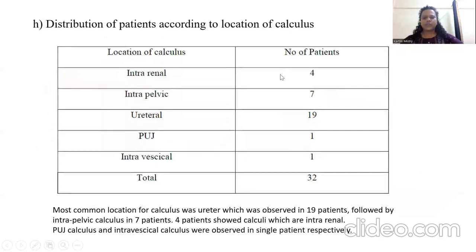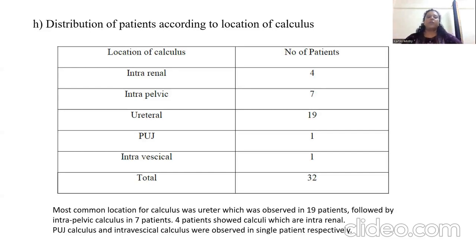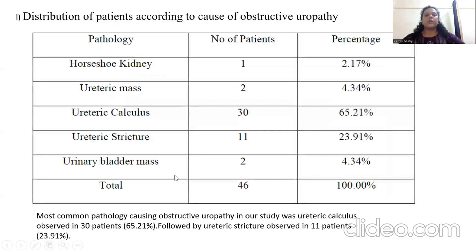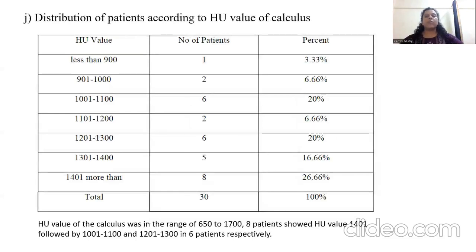Distribution of patients according to location of the calculus: the most common location was the ureter, observed in 19% of patients, followed by intrapelvic calculus in 7%. Four patients showed intrarenal calculi, and PUJ calculus and intravesical calculus were observed in single patients respectively. The most common pathology causing obstructive uropathy was ureteric calculus, observed in 30% of patients, followed by ureteric stricture in 11 patients, that is 23%. The HU value of the calculus ranged from 650 to 1700; 8 patients showed HU values of 1400, followed by 1001 to 1100 and 1201 to 1300 in 6 patients each.